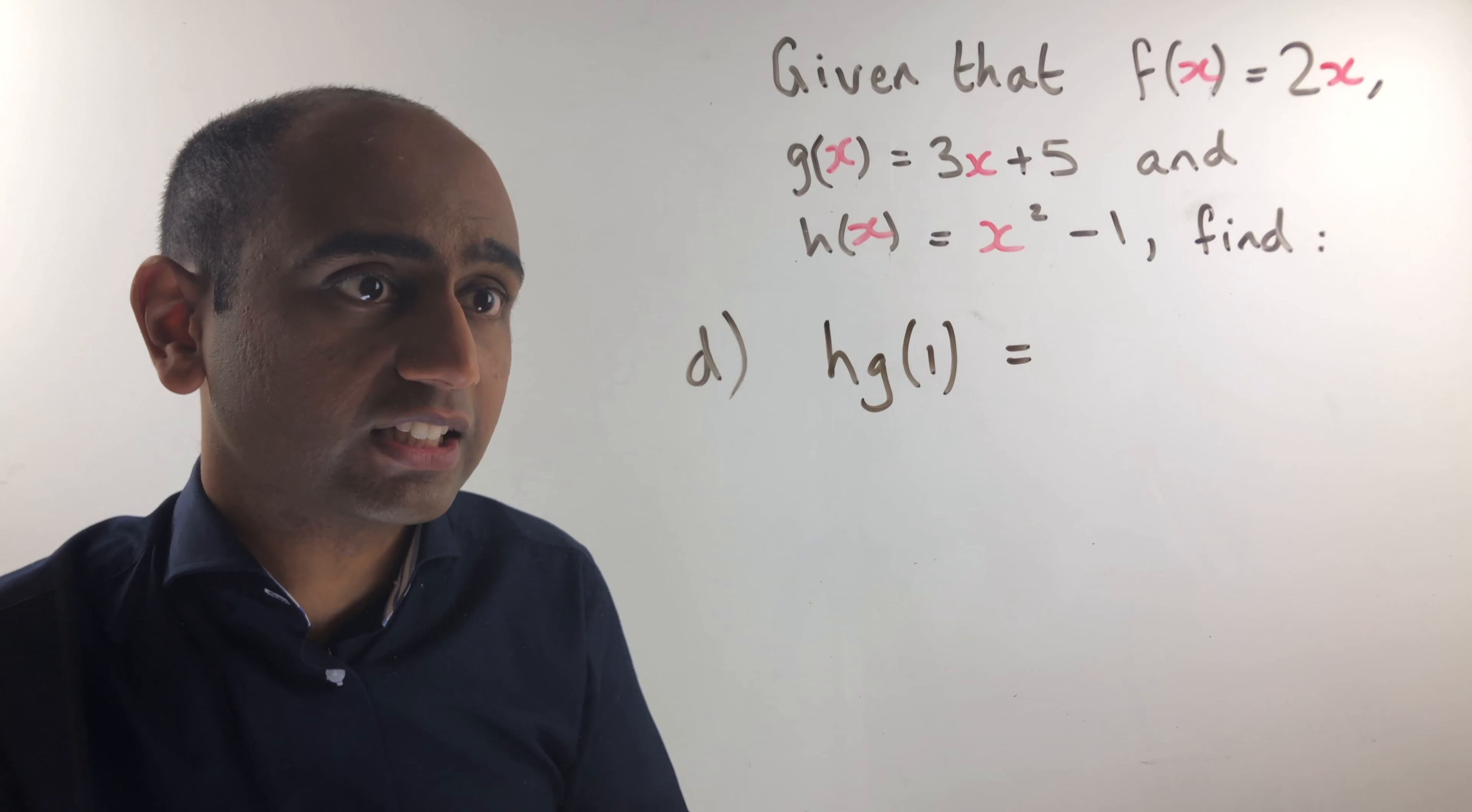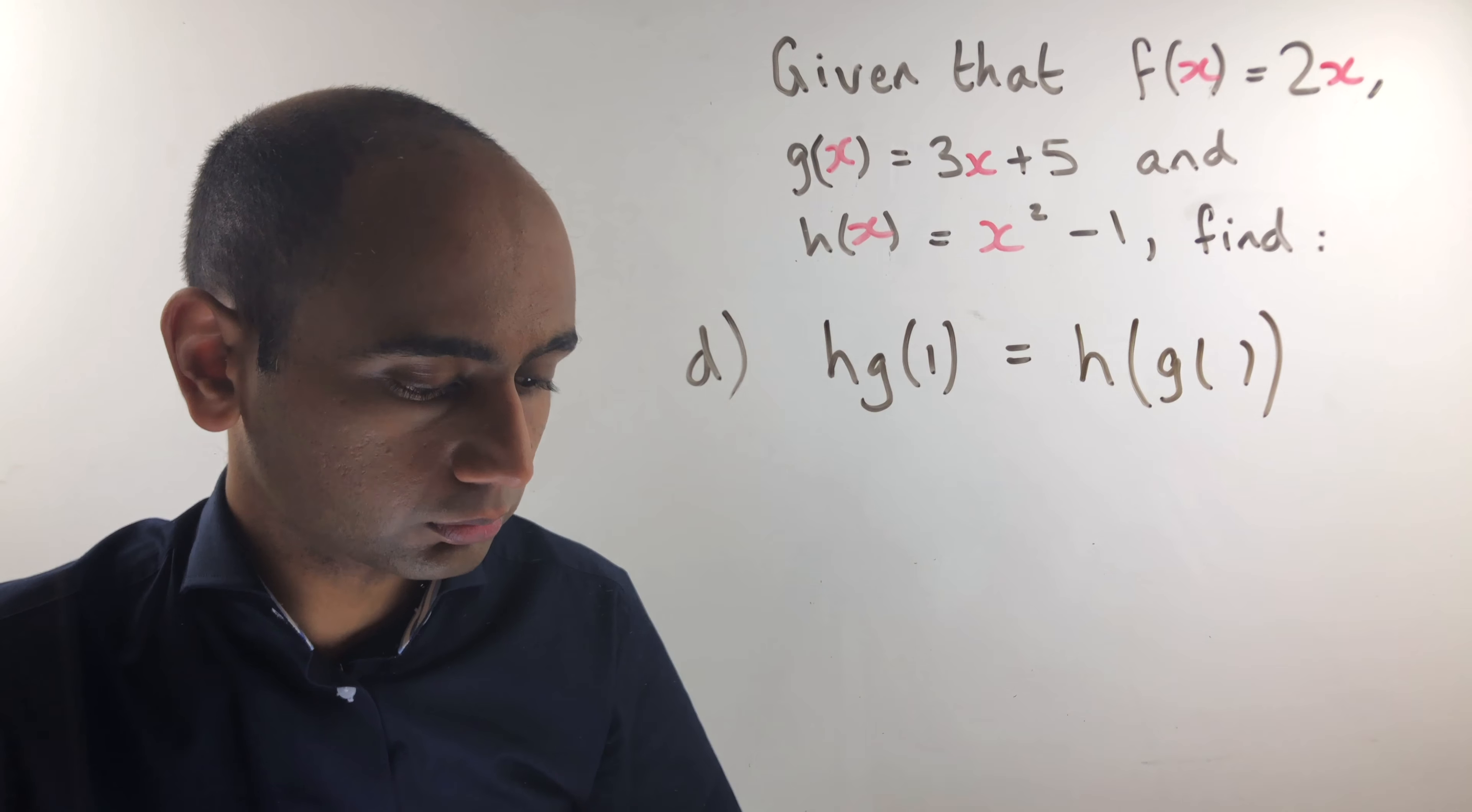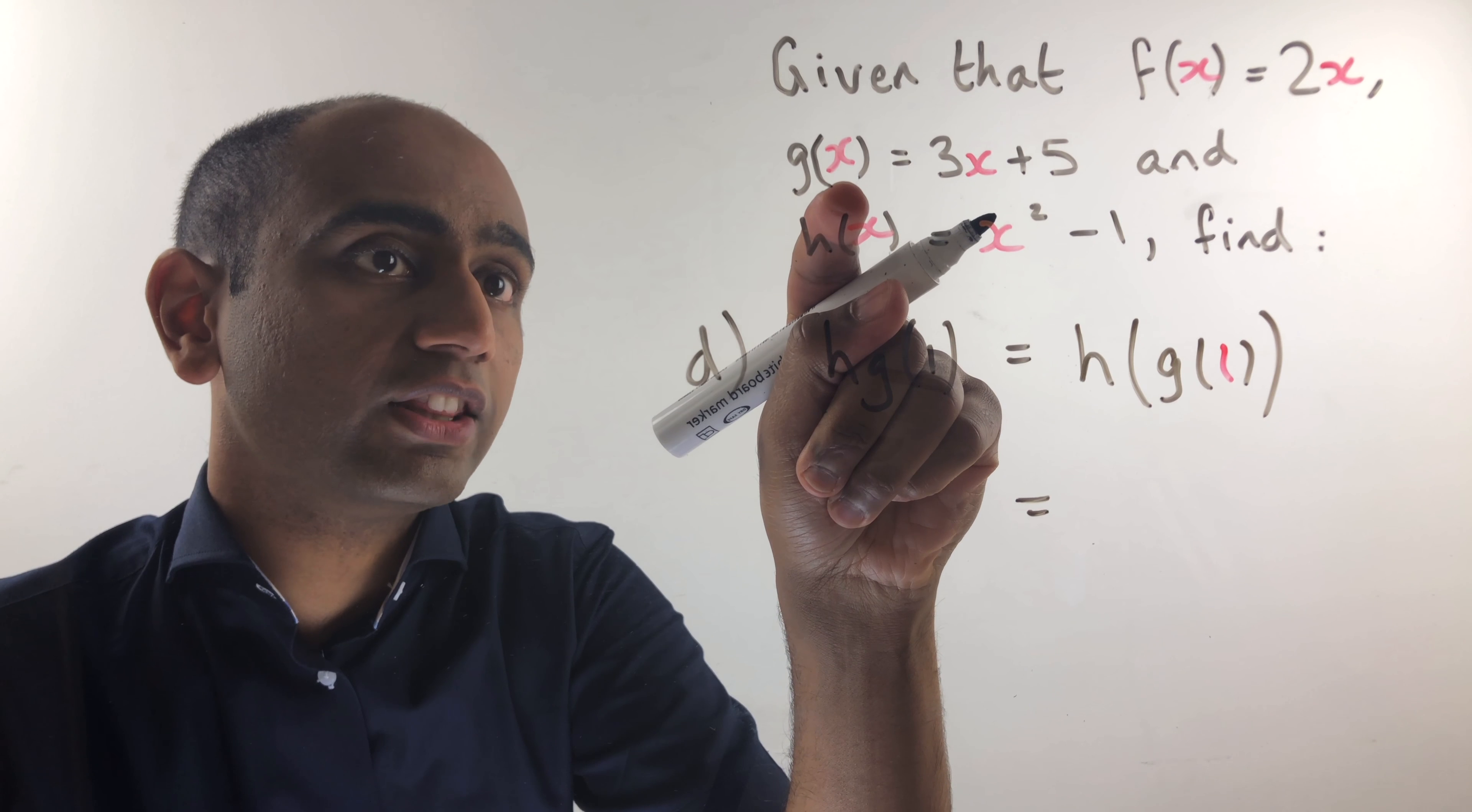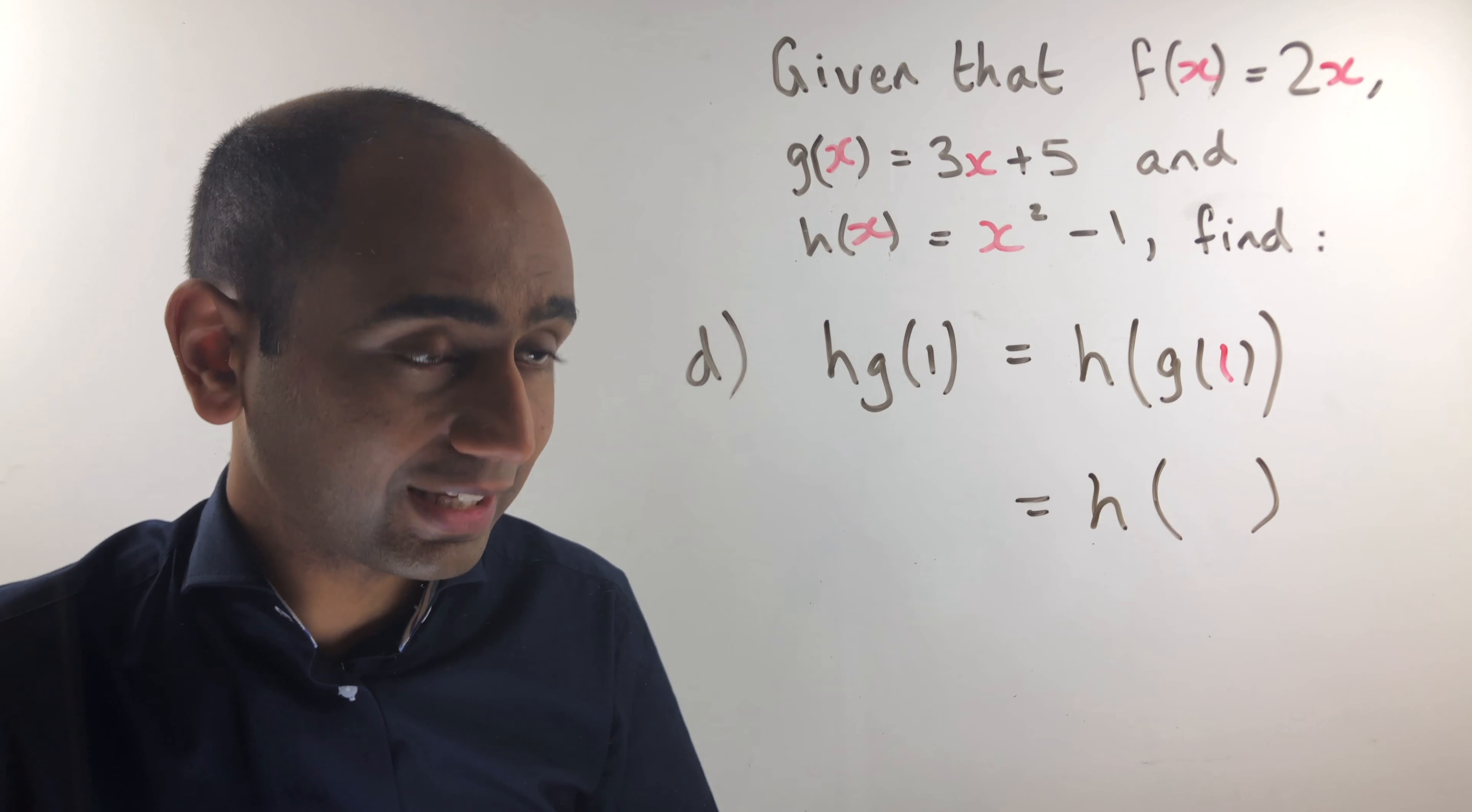Pause the video and have a go at part d for yourself. Here's the answer. hg of 1 is simply h of g of 1. So first we're going to input 1 into the function g and if we input 1 in there we're going to get 3 lots of 1 plus 5. 3 lots of 1 is 3 plus 5 gives us 8. So we're going to do h of 8.